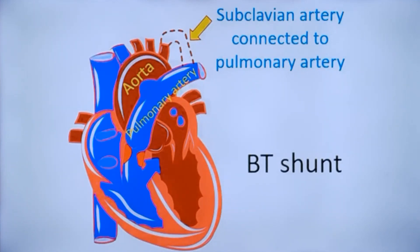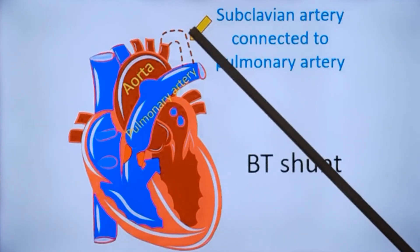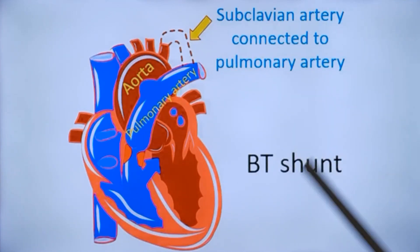The normal aortic arch is on the left, and the brachiocephalic trunk is on the right side. However, some patients with Tetralogy of Fallot have the aortic arch on the right side, in which case a left BT shunt can be performed.